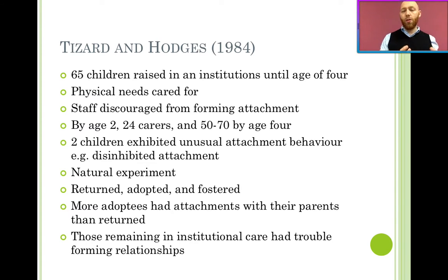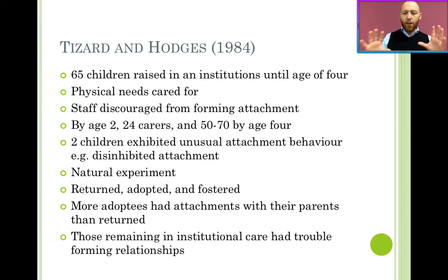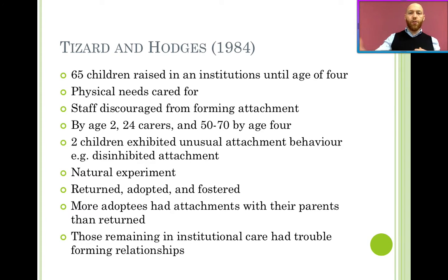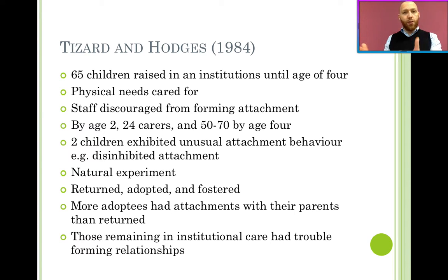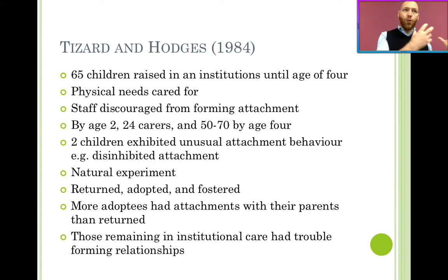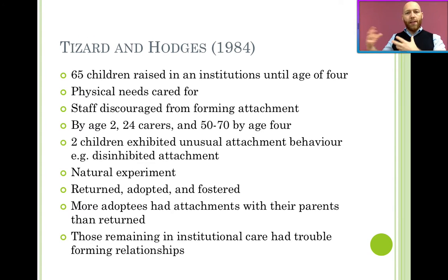The restored children had fewer specific attachments, and their attachment was generally weaker than the adopted group. But most notably, the group that were fostered and constantly returned showed extremely high levels of disinhibited attachment. This shows that the result of institutionalization — the cause of which is something like emotional deprivation — can result in attachment disorders later in life, where children rapidly attach to people indiscriminately.